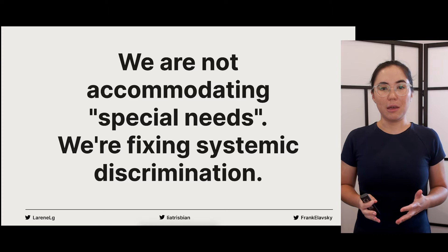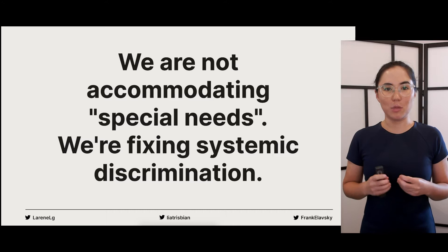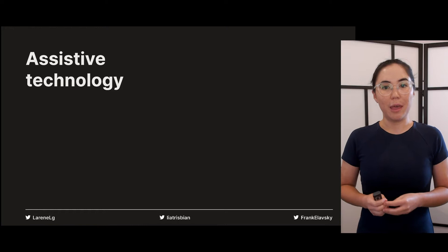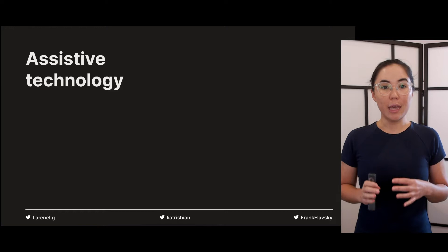By learning about disability, we're not learning to accommodate special needs. The exciting thing about accessibility is we have the power to fix systemic discrimination. The next thing to understand is that many disabled people use what's called assistive technology — devices or software that help them interact with their environment.